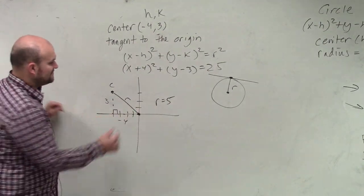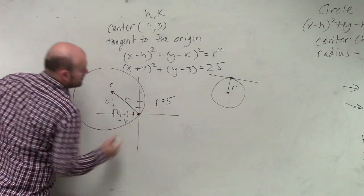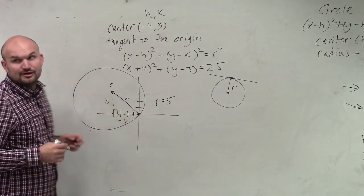So therefore, my radius is 5 because my circle looks something like this. It's tangent right at that 0 at that one point.